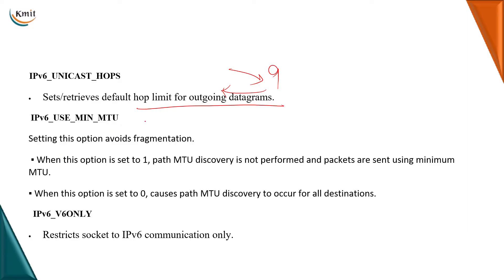IPv6 use minimum MTU: setting this option avoids fragmentation. When set to one, packets are sent using the minimum MTU value. When set to zero, it allows MTU discovery to occur for all destinations, so you find out the MTU value for all destinations. IPv6 v6 only option restricts the socket to IPv6 communication only, not for IPv4.